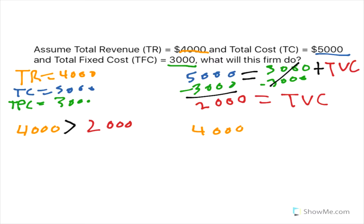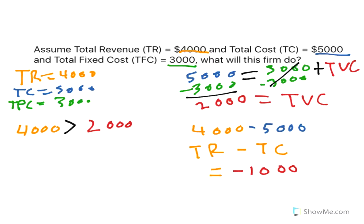They'll ask us what their total profits are. To get profits, we take total revenue minus total cost. That gives us $4,000 minus $5,000, which is a negative $1,000. We tell the business they should stay in business, but right now they're going to lose $1,000 just by operating.